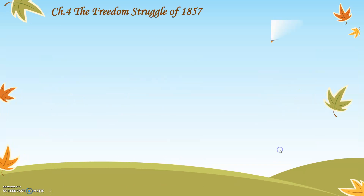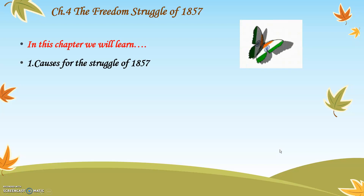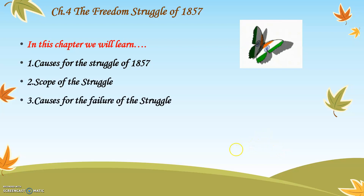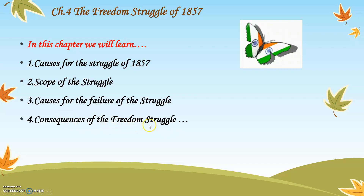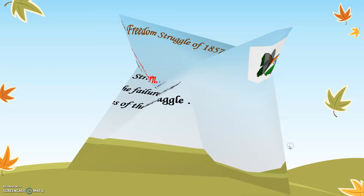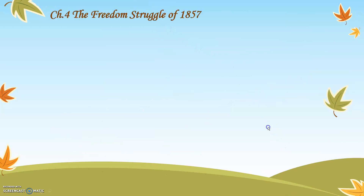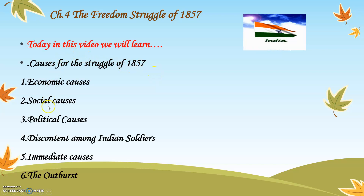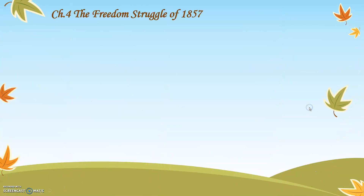So let us get started with Chapter 4: The Freedom Struggle of 1857. The points we will be covering in this entire chapter are: Causes for the Struggle of 1857, Scope of the Struggle, Causes for the Failure of the Struggle, and Consequences of the Freedom Struggle. In this particular video, we will learn the causes for the struggle of 1857 — economic causes, social causes, political causes, discontent among Indian soldiers, immediate causes, and the outburst.